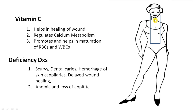Coming further down to the thyroid and parathyroid region: Vitamin C also helps in the metabolism of calcium. Moving down to the bone marrow region, it promotes maturation of RBCs and WBCs. Deficiency of Vitamin C leads to anemia and loss of appetite.